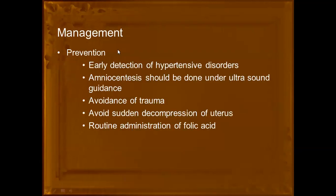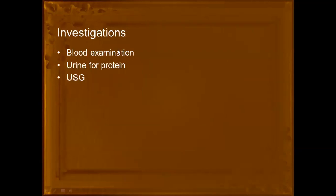The main three investigations are: blood examination for grouping and cross-matching, with blood availability ensured; urine for protein, because hypertensive disorder is one of the risk factors — to find out if the mother has preeclampsia or eclampsia; and an ultrasound (USG) should also be done.